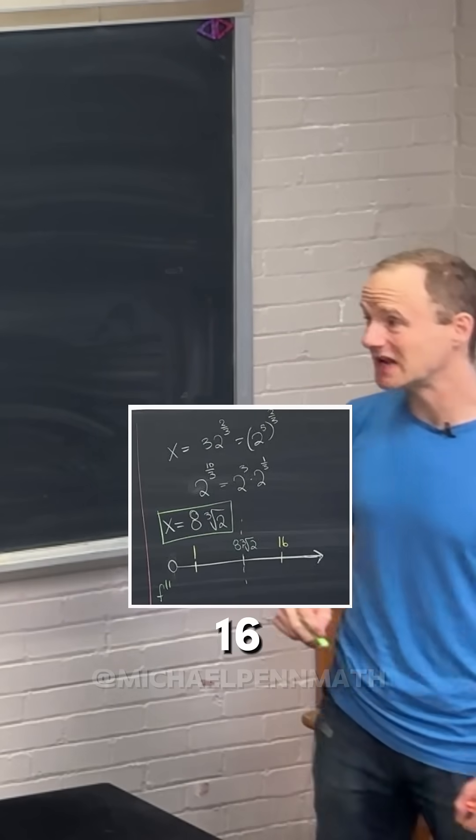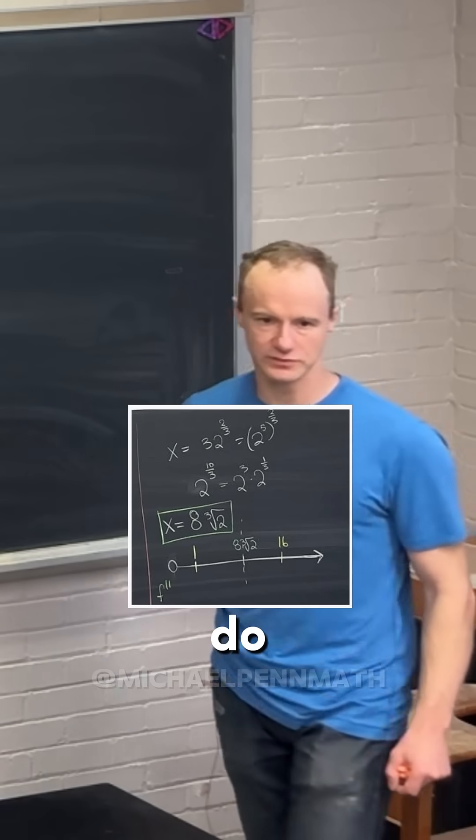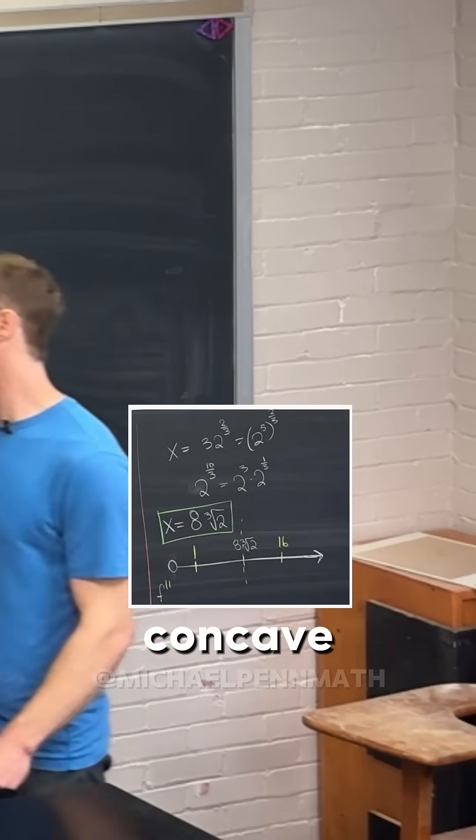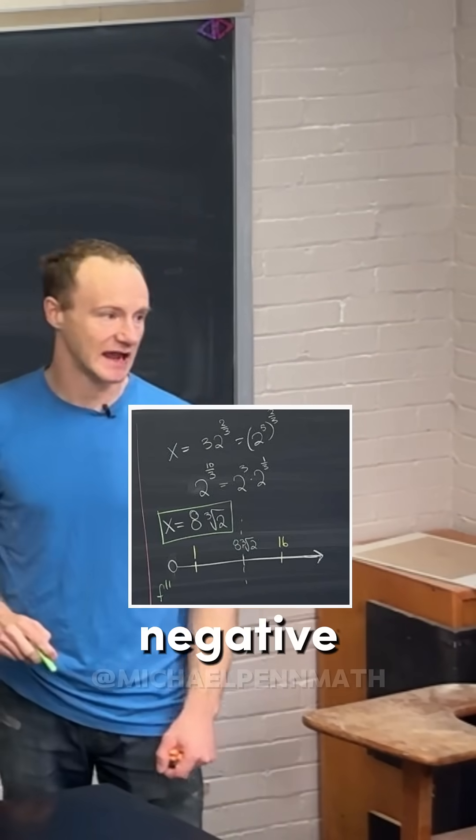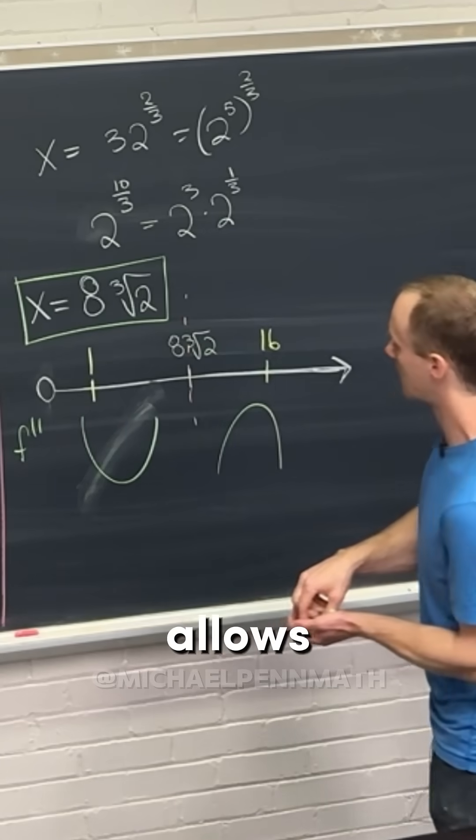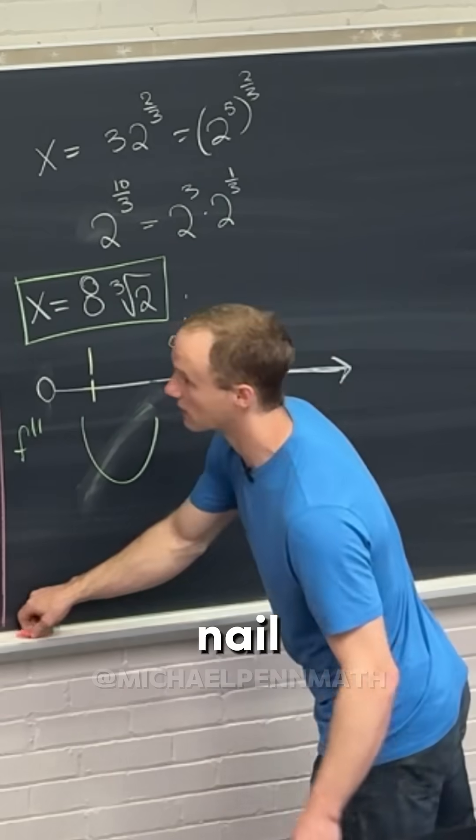And then if you plug 16 in there, well, I'll let you do the numbers, but what you'll see is that this is concave down. You get a negative second derivative. So that allows us to really put a nail in this, finish it all off.